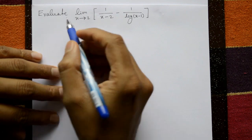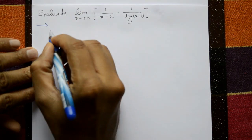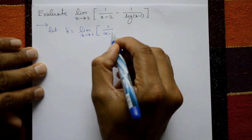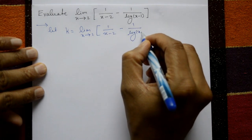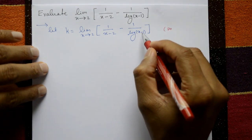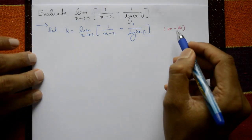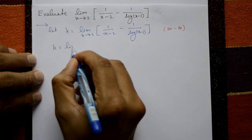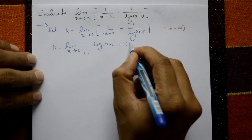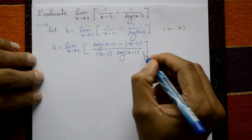Evaluate limit x tends to 2 of 1/(x-2) minus 1/log(x-1). Let k equal this limit. Taking x = 2: 1/(2-2) = infinity and 1/log(1) = 1/0 = infinity, giving infinity minus infinity. L'Hôpital's rule cannot be applied directly, so take LCM: k = limit x tends to 2 of [log(x-1) minus (x-2)] divided by [(x-2)·log(x-1)].